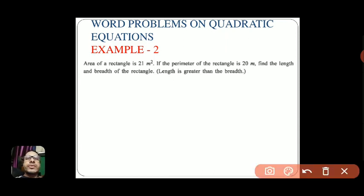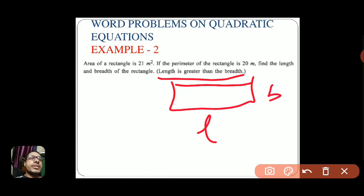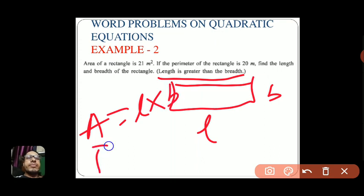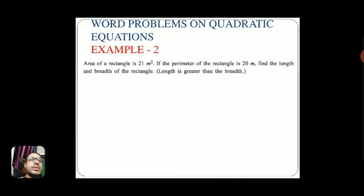To solve this, we need the formulas for a rectangle. The longest side is the length and the shorter side is the breadth. Area is given by length × breadth, and perimeter is given by 2(length + breadth). Area is given as 21 square metres, so we declare variables for length and breadth.